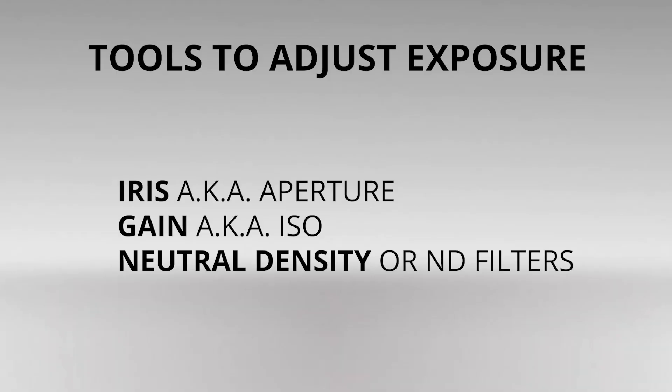We didn't always have this problem. In the old days, before video cameras and still photo cameras were the same devices, professional and prosumer cameras gave video shooters three tools to adjust exposure: iris (aka aperture), gain (aka ISO), and neutral density or ND filters. Sure, you could adjust the shutter speed, but shutter control was usually not easily accessible.